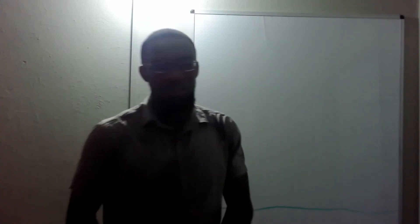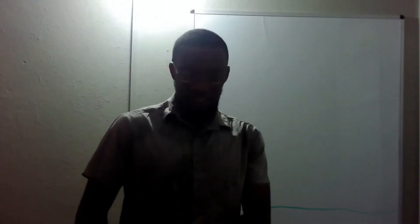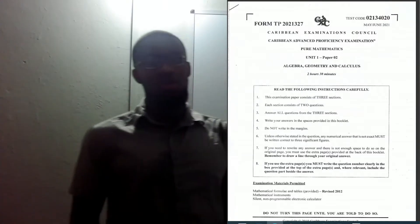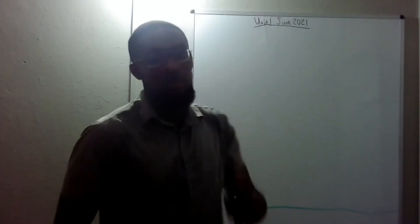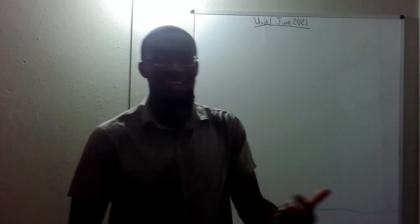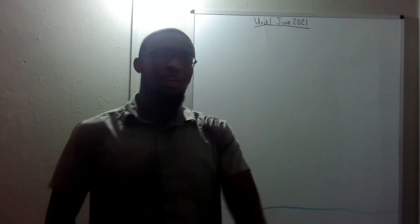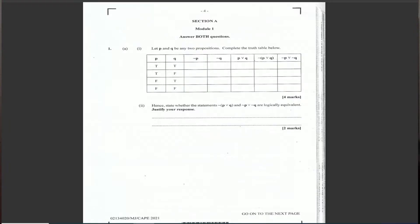Welcome! Today we're going through the Pure Mathematics Unit One 2021 paper and we're going to have lots of fun with lots of fresh markers. If you recently did the June 2021 paper, you can use this video to see how you went and gauge how the paper went for you. Question one is a truth table question.